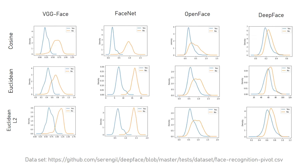Distance distribution of positive and negative face pairs are illustrated in this graph. Rows represent the distance metric, whereas columns state the face recognition models. Notice that how discrete the positive and negative classes are, the better the model is. So it seems that Google FaceNet offers the most robust model among others. Besides, the L2 form seems more stable than cosine and regular Euclidean distance.